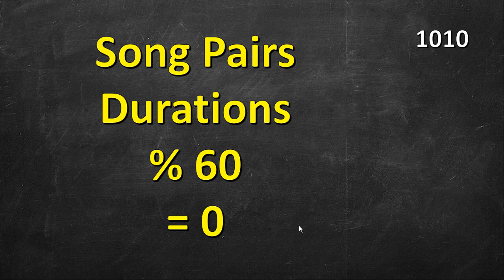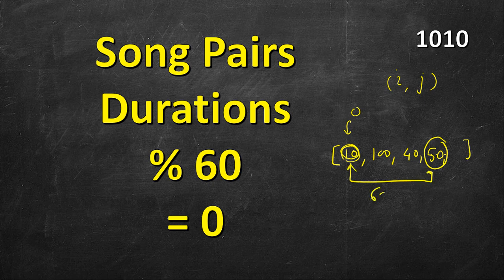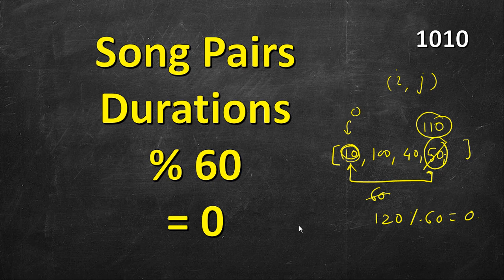In this problem we are given the duration of different songs, so we will have an array of song durations. For example, the first song may be 10 seconds, the second 100 seconds, the third 40, and so on. We have to find the count of song pairs — a pair of indices i and j — such that if you add their two durations the sum is divisible by 60.